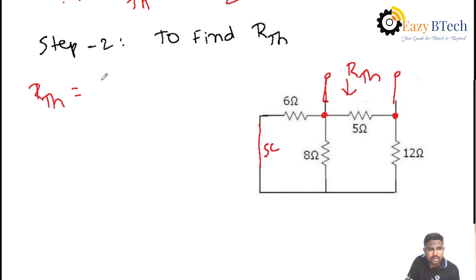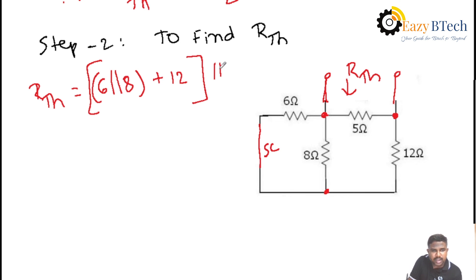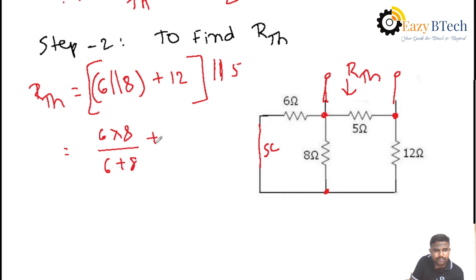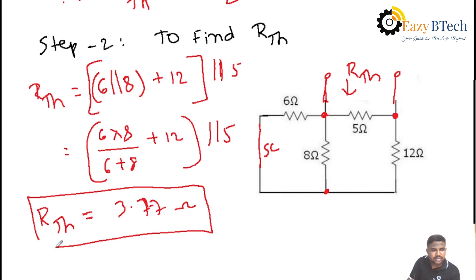6 ohms is in parallel with 8 ohms — both are joined across the same two nodes. After simplifying the parallel combination, that must be in series with 12 ohms. After calculating this combination, the result must be in parallel with 5 ohms. Simplifying: R1·R2 divided by R1 plus R2, plus 12, and this combination in parallel with 5. Solving, you will get Rth equal to 3.77 ohms. This is the value of Thevenin's resistance.